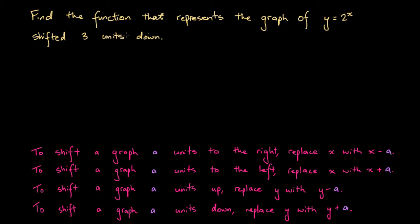Here we want to shift the graph of this particular function 3 units down, and so we look for down in this set of rules. It says to shift a graph a units down, replace y with y plus a. So here a represents some real number, and we're asked to shift this graph 3 units down.